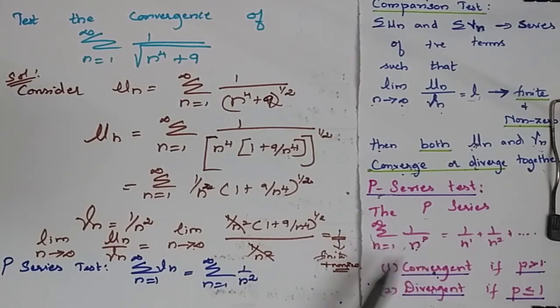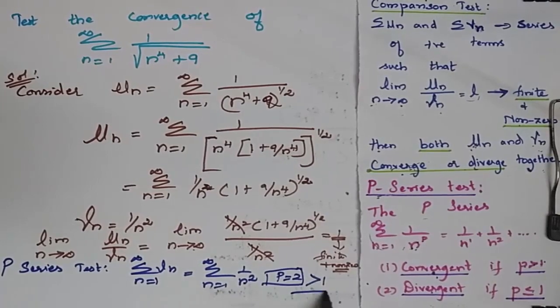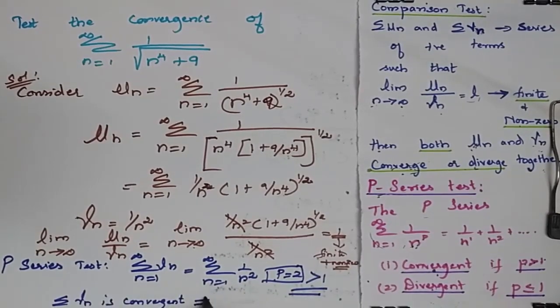When I compare this with this, my p value is 2, greater than 1. My summation vn is convergent. It implies that summation vn is convergent.